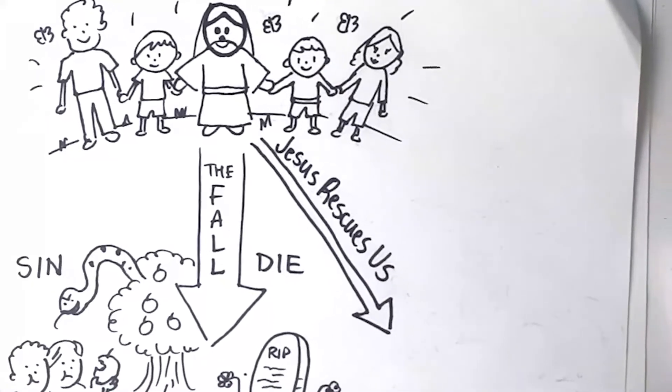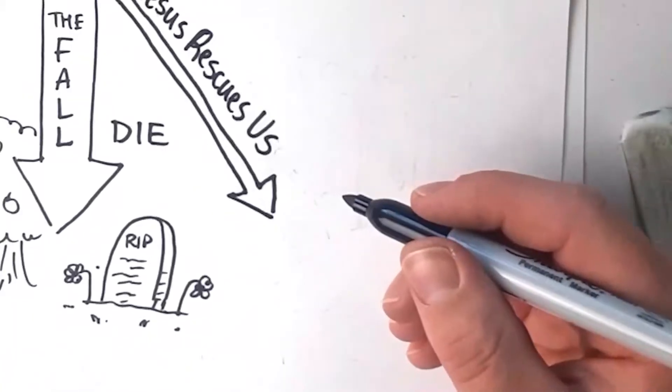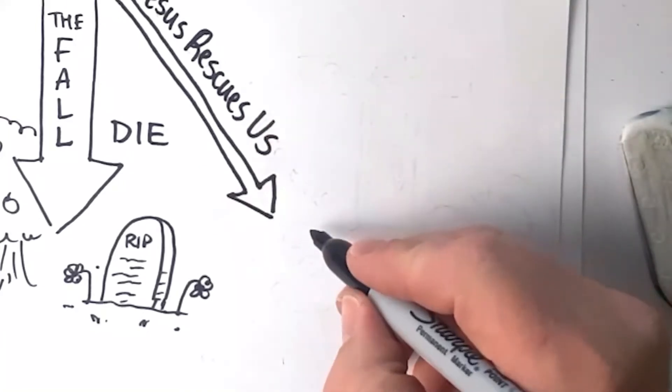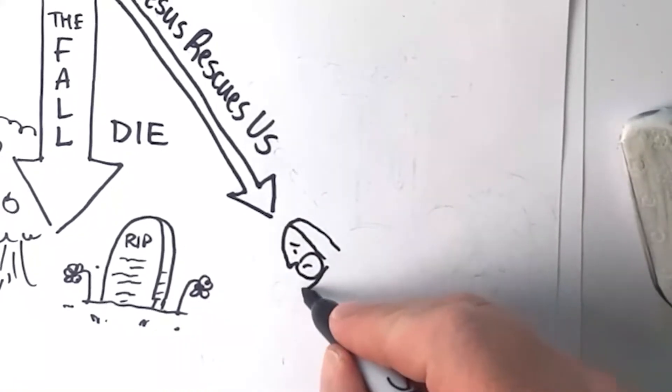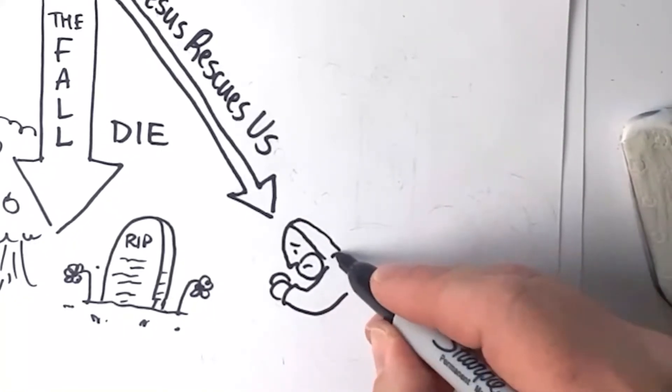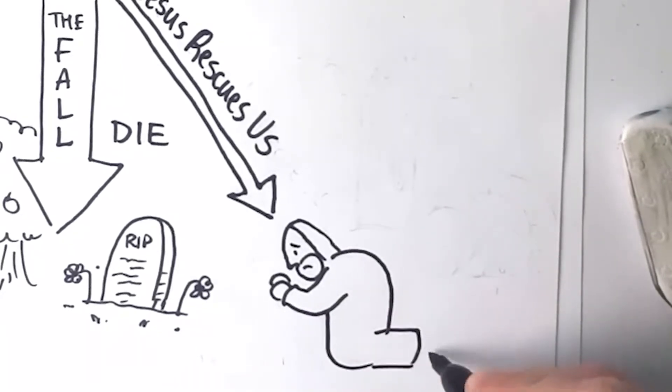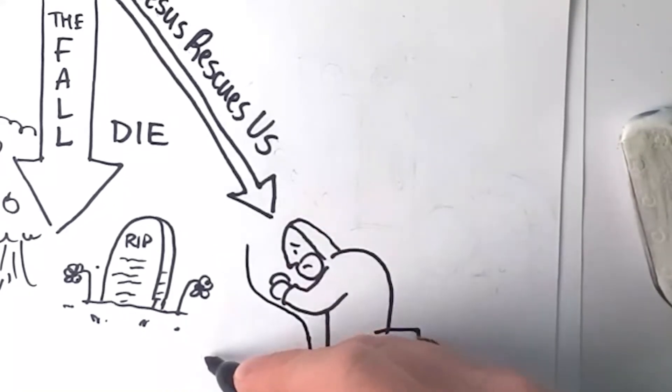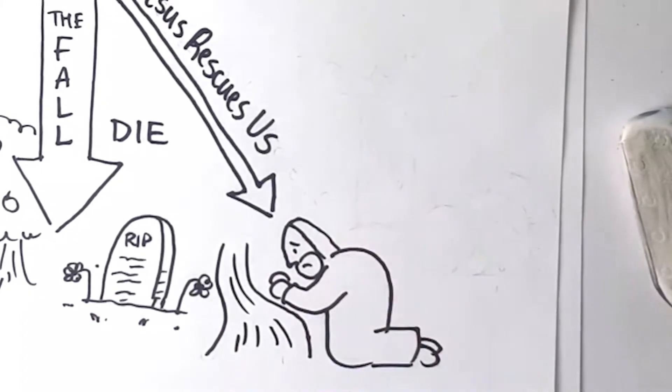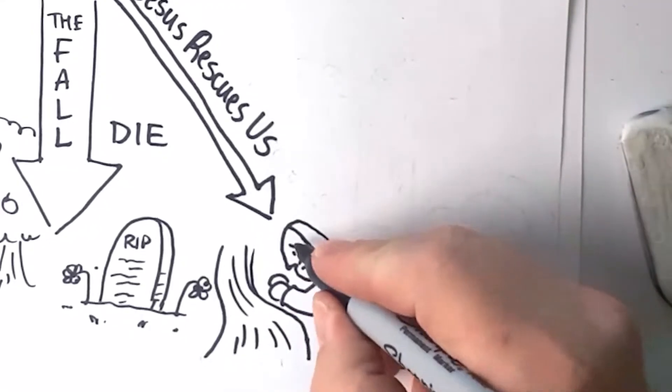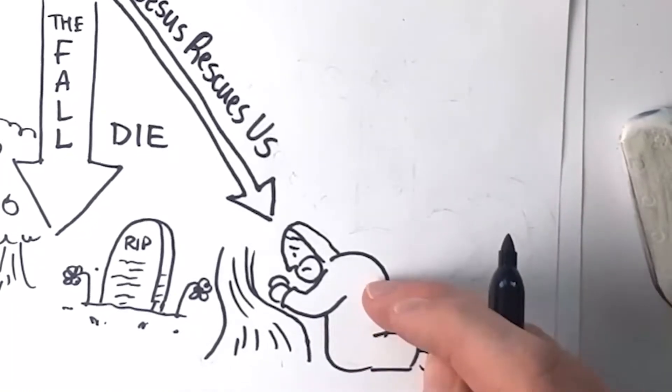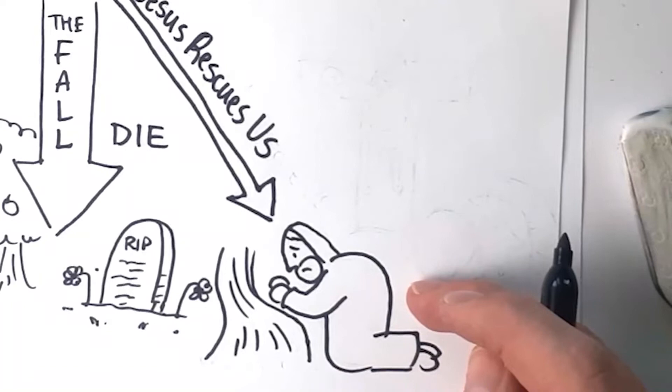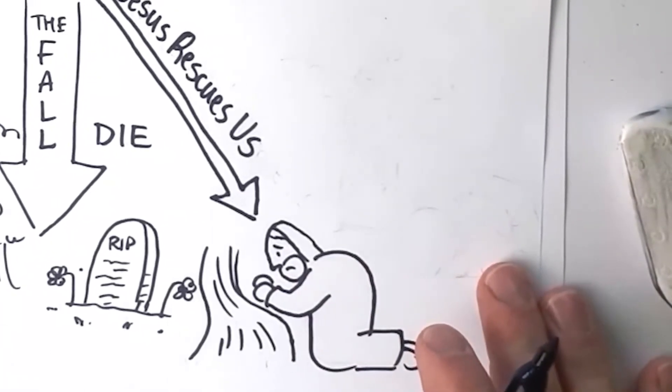And what Jesus did, among many things, among giving us a perfect example of how to live, he took upon him all of our sins. So in a garden called the garden of Gethsemane, Jesus atoned for our sins. What that means is he took upon him all of our sins, the burden and the consequence of all of our sins. He felt all of our pain and sorrow. He hurt so much that he bled from every pore. He sweat great drops of blood for the transgressions of his people. So he paid that ultimate price.